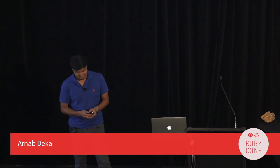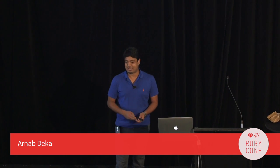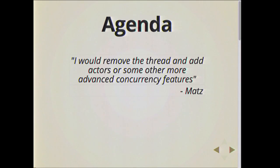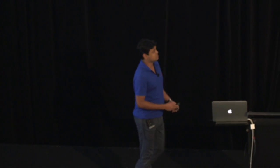The premise of this talk is I was reading a book called Seven Languages in Seven Weeks, and one of the languages is Ruby. The author, Bruce Tate, asks Matz: what would you change if you could change one thing in Ruby? He basically said he'd remove the threading model we have and replace it with a higher-level advanced concurrency feature. Today I'd like to share some of those different advanced models and see how you can do some of those in Ruby.